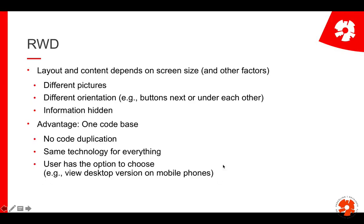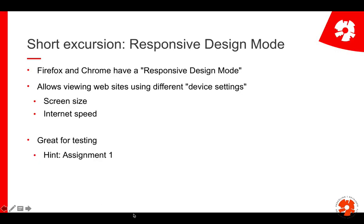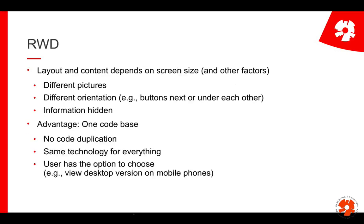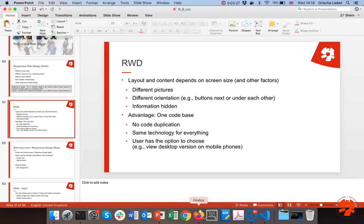Another underrated advantage is user choice. If I know that a mobile website hides information, I can actually view the desktop version on a mobile phone and get all the details, even though it's a bit harder to use. I can show you some examples of this.